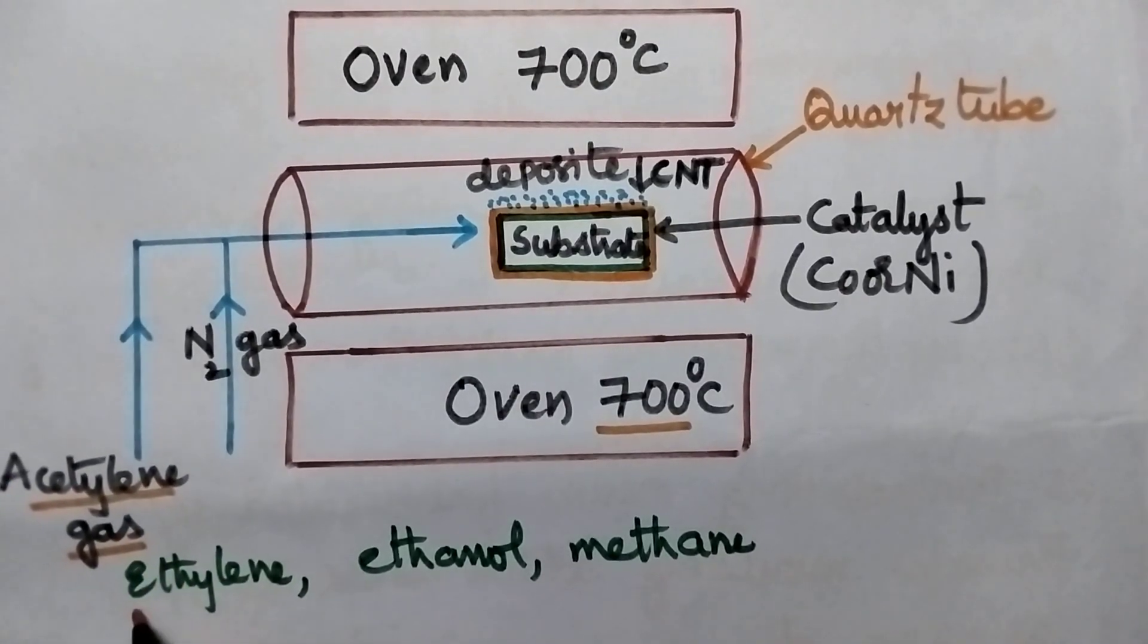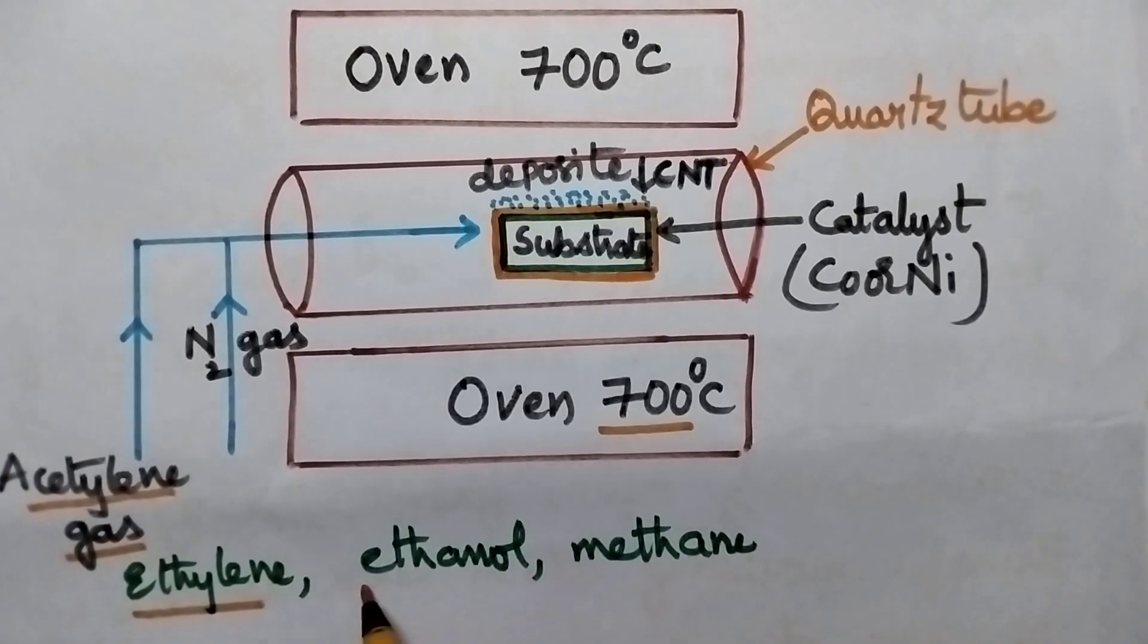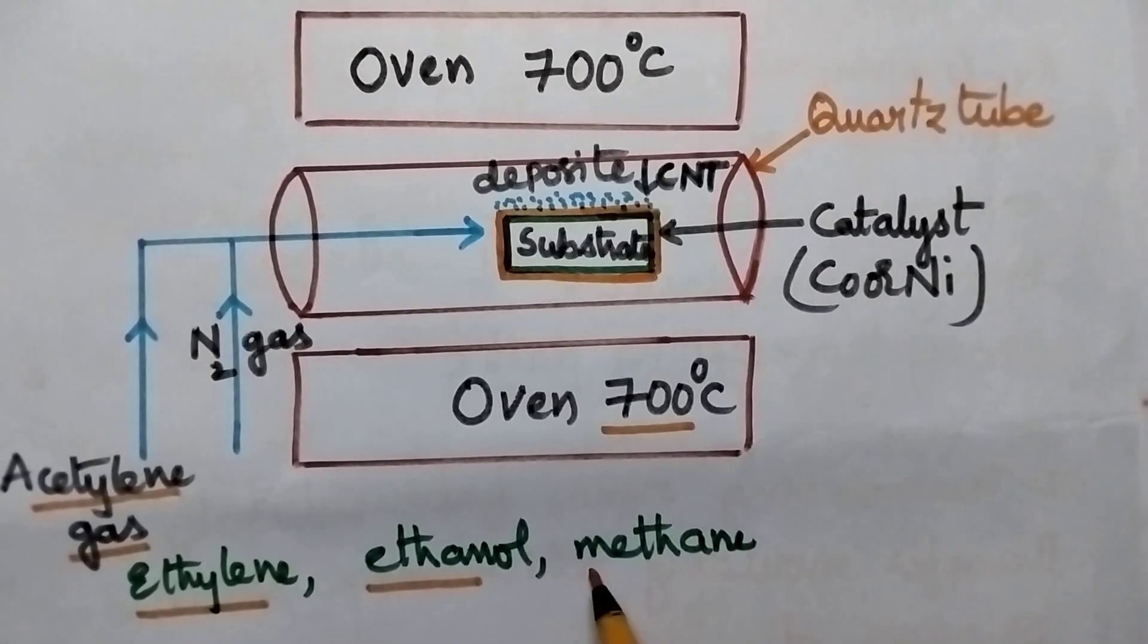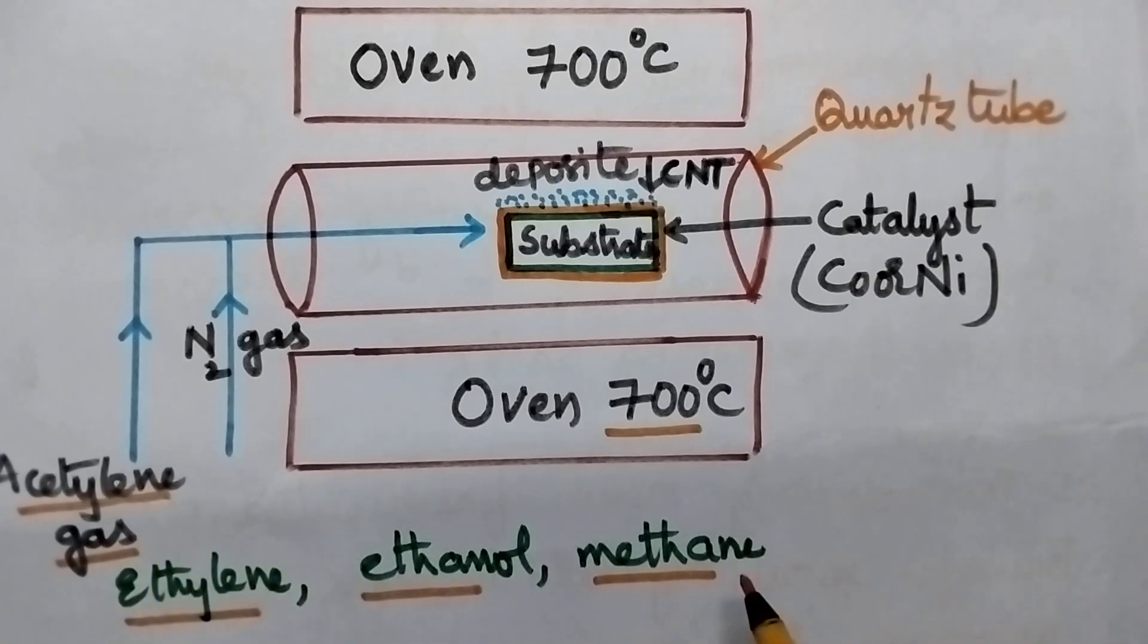Instead of acetylene gas, we can also consider ethylene gas, ethanol, or even methane. These gases will act as source of carbon for the preparation of carbon nanotubes.